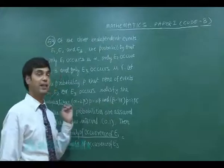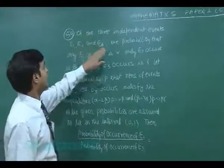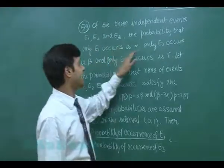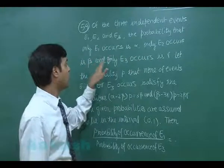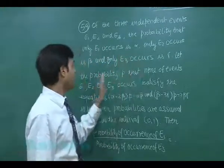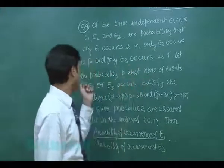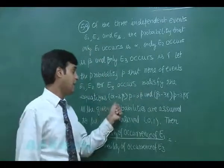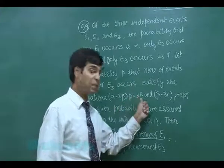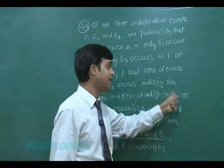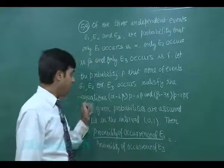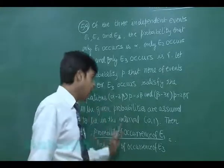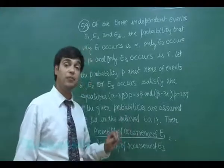Let's talk about question number 59. Of the three independent events E1, E2, and E3, the probability that only E1 occurs is alpha, only E2 occurs is beta, only E3 occurs is gamma. The probability P that none of the events E1, E2, or E3 occurs satisfies the equations: (alpha minus 2*beta)*p = alpha*beta and (beta minus 3*gamma)*p = 2*beta*gamma. All given probabilities are in the interval (0,1). We need to find P(E1) / P(E3).